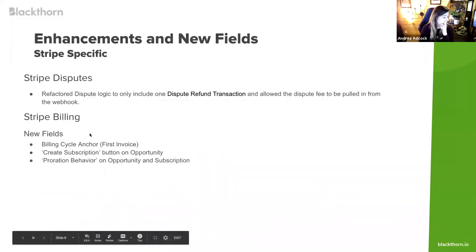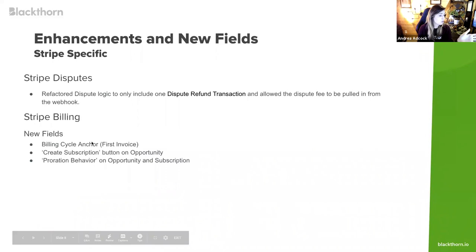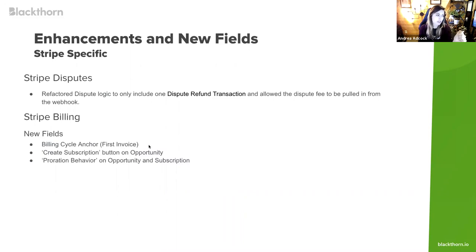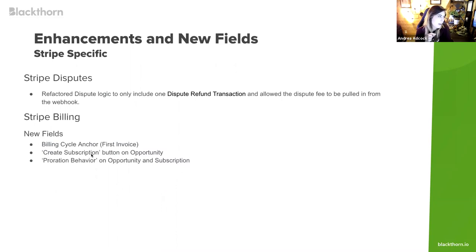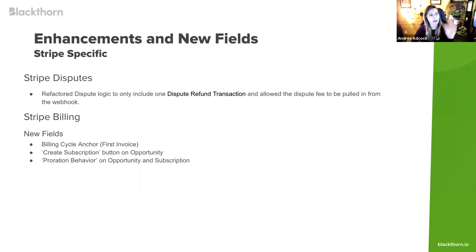For Stripe-specific enhancements: we've refactored dispute logic. Previously, when a customer disputed a transaction, we created a dispute record and two refund transactions — one for the original charge and one for the $15 Stripe dispute fee. Now we bring in just one refund transaction and note the payment gateway fee on that refund, aligning with how Stripe handles payouts since they treat the fee as inline rather than a separate record. We also looked at new fields covered in the new features section: the Billing Cycle Anchor field has been added to the opportunity, the 'Create Subscription' button has been added, and Proration Behavior replaces the old Prorate yes/no field.